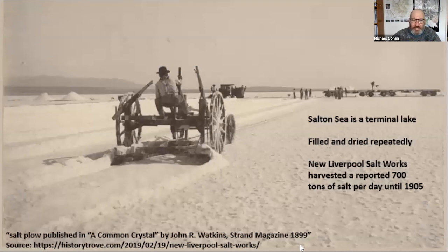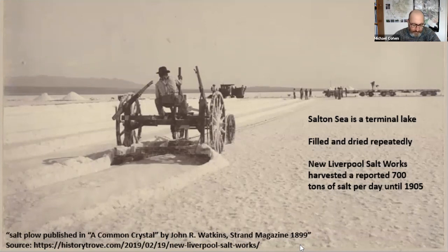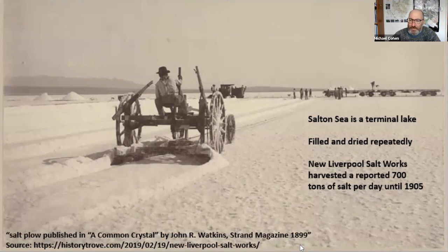A quick background on the Salton Sea: it was formed back in 1905 when the full flow of the Colorado River flowed into what used to be Lake Cahuilla, an ancient salt bed. There was an active salt mining operation at the Salton Sea prior to this most recent incarnation of the lake. For many years, salt accumulated as lakes evaporated, and when freshwater came back in, it became much saltier much quicker because a lot of those salts went back into solution.